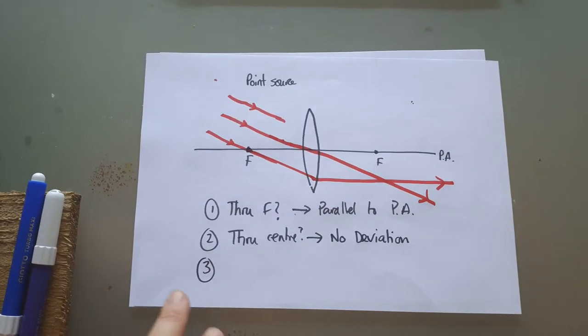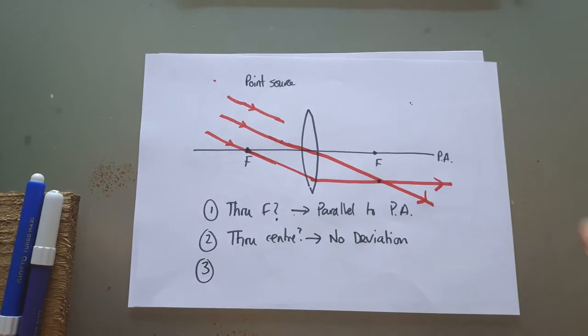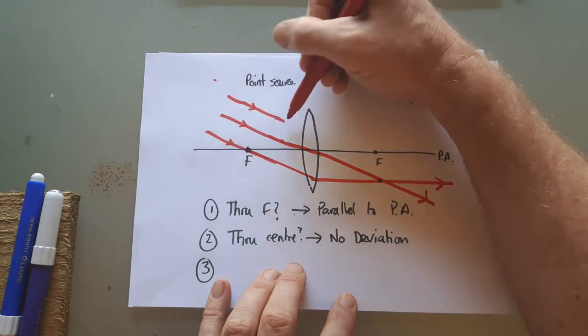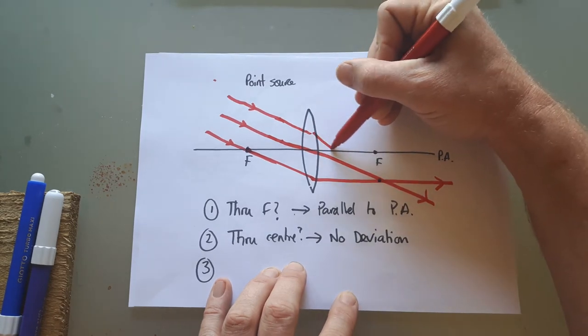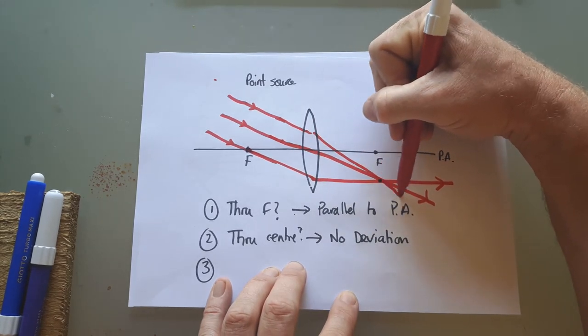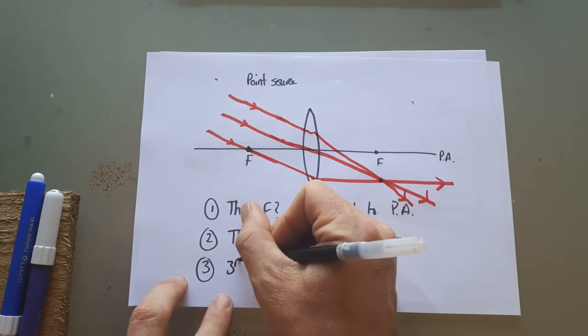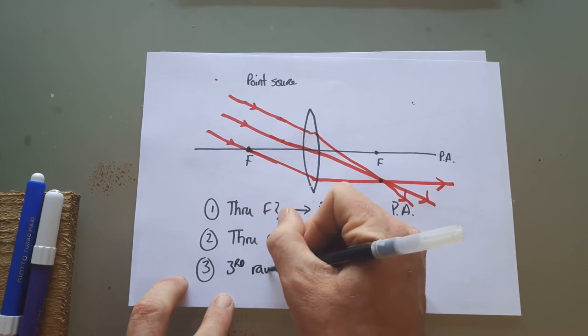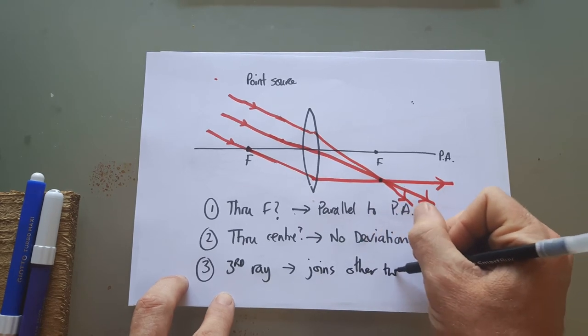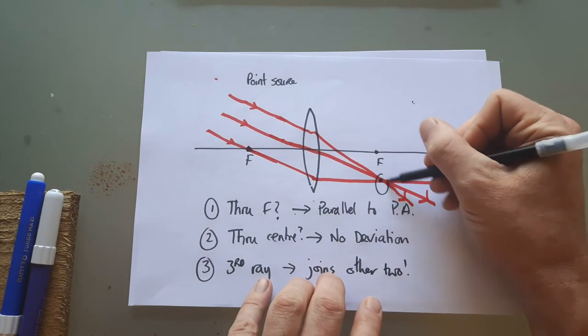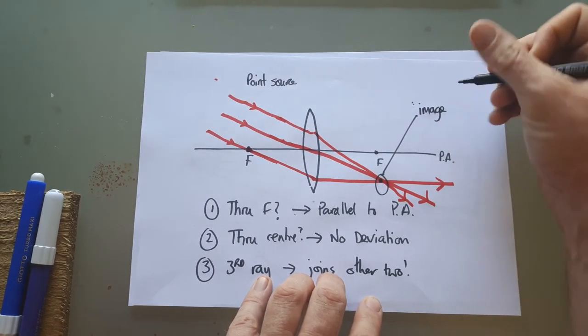For our final ray, we've already got this point here where they're starting to join up, and it should be directly below the focal point, but my diagram is not super accurate. The third ray comes along and we just make sure it joins up with those two. Third ray joins the other two. This point here where the rays meet is where the image forms.